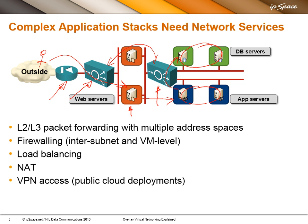We need all sorts of networking services to support these application stacks. First, we need different subnets — subnet A, subnet B, subnet C, and subnet D. Sometimes these subnets could be layer 3 subnets. Sometimes applications require layer 2 subnets for things like Microsoft Network Load Balancing, or for high availability solutions where two boxes share the same IP address, which requires gratuitous ARPs and layer 2 connectivity between all the servers in the same subnet.